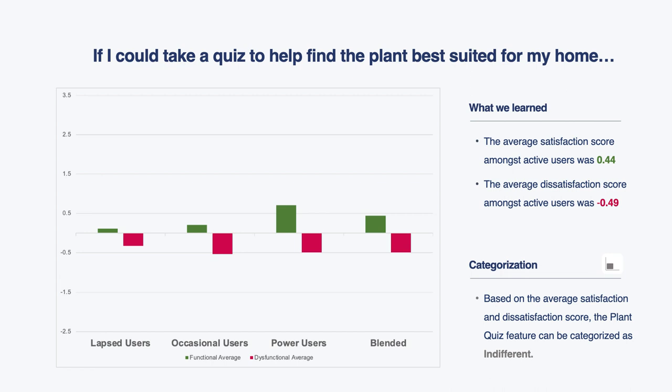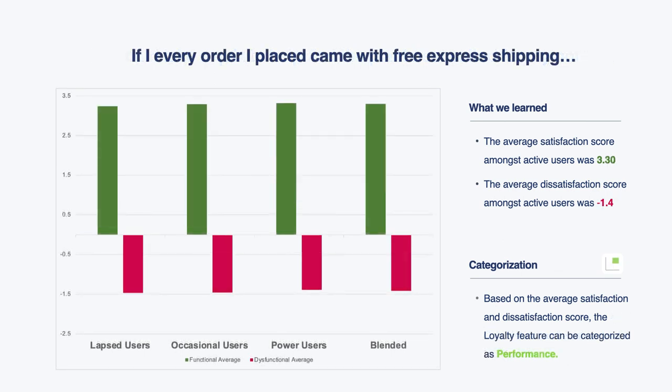Looking at a different feature: 'If every order I place came with free express shipping, what would that do for satisfaction?' Here we see something very different — the average satisfaction score is much higher, and inversely the average dissatisfaction score is much lower. A much more intense response. This data set is telling us that if this feature were available, it would yield meaningful satisfaction across customers, and if it weren't, perhaps they'd feel like they're missing out on something competitors offer.